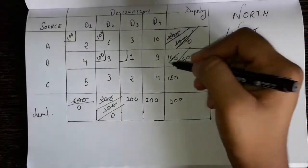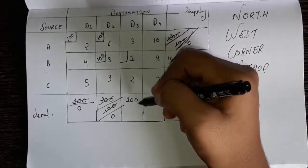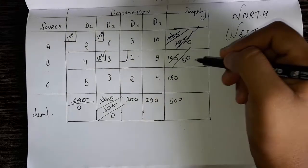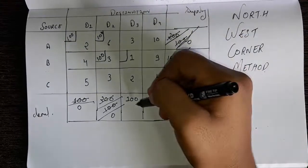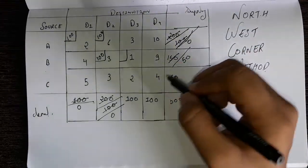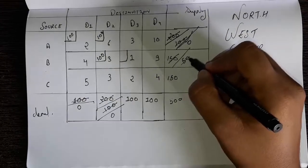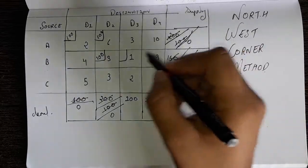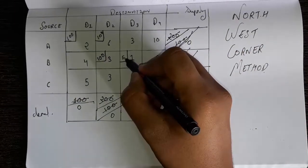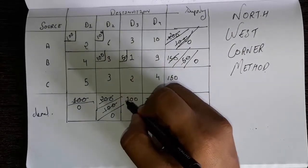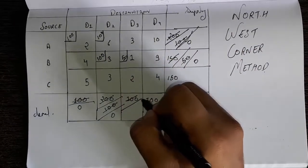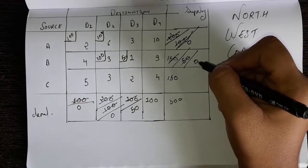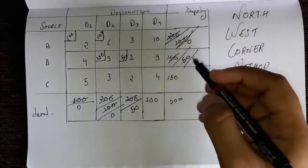Now we will see the demand and supply of this corner. This is 50, this is 100. 100 minus 50 will become 50. This 50 will become 0 and we have to write the 50 here, and this 100 will become 50. Now we cannot go on the right side because this became 0, we have to go to the downside.